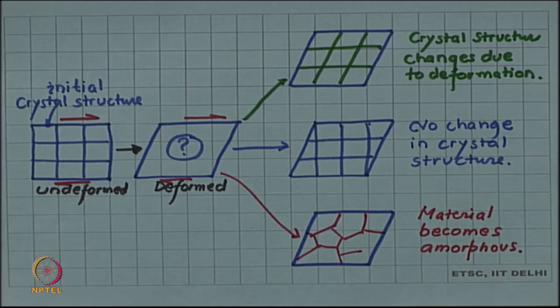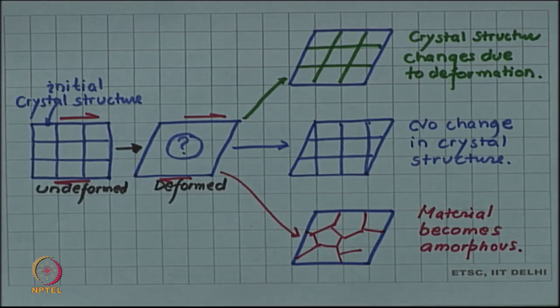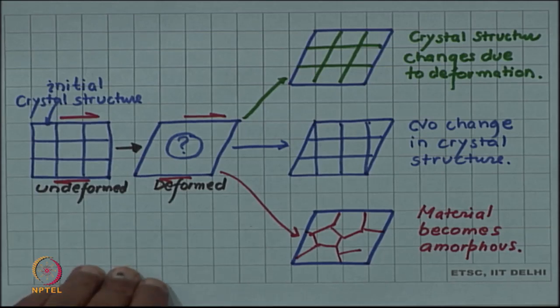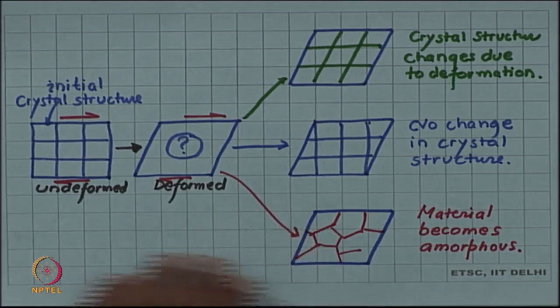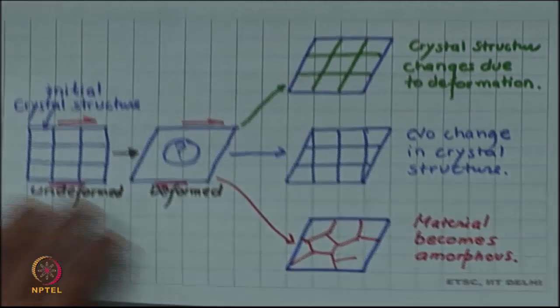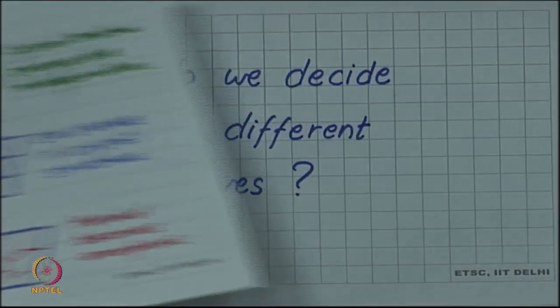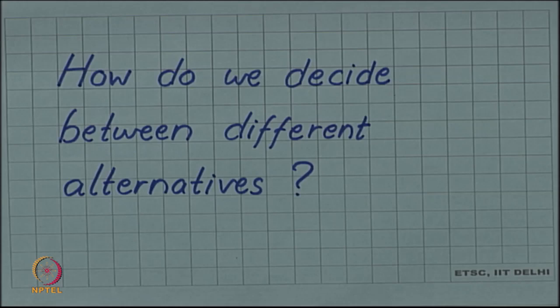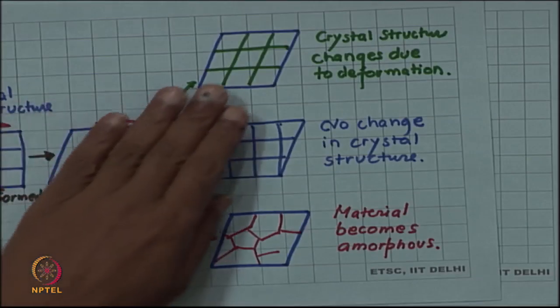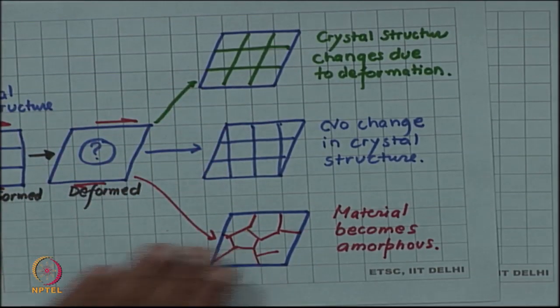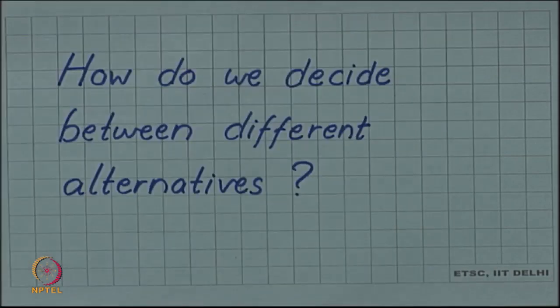I have given you these three options. You may even think of yet another some other new option other than these three. But the question is how do we decide? How do we decide between these three alternatives or any other alternative that you think of? What is the basis for decision? How do we say whether the crystal structure changes or does not change or the material becomes amorphous? How do we decide between these different alternatives?